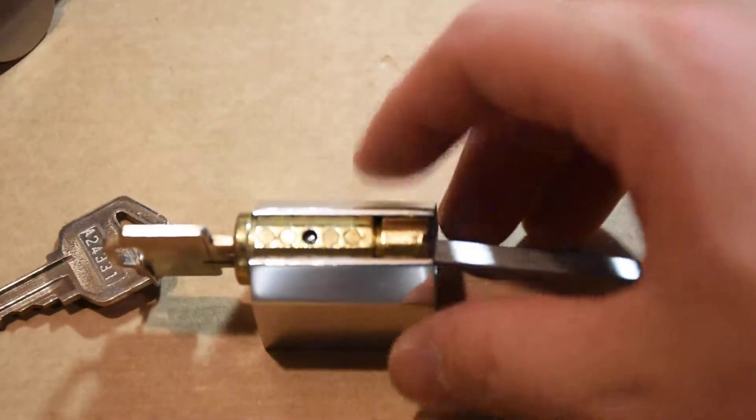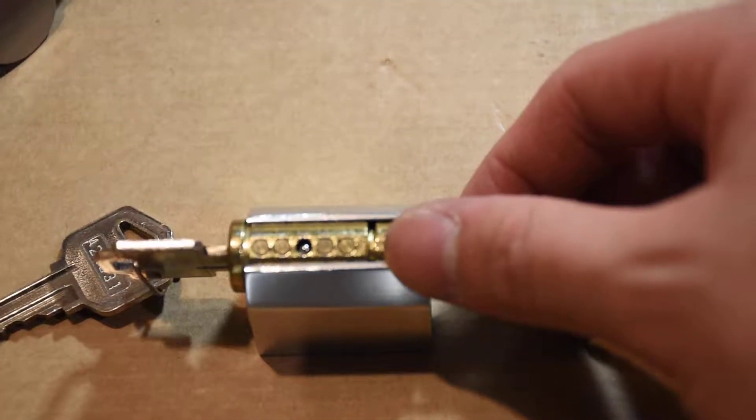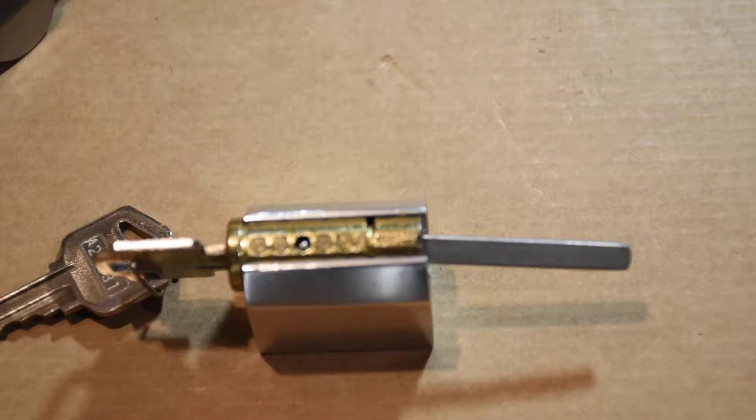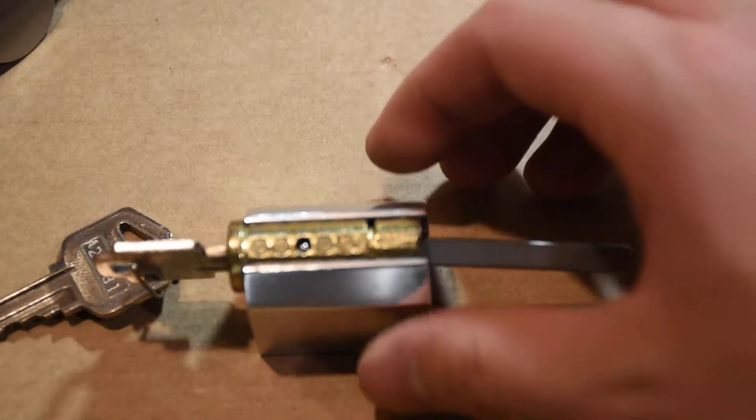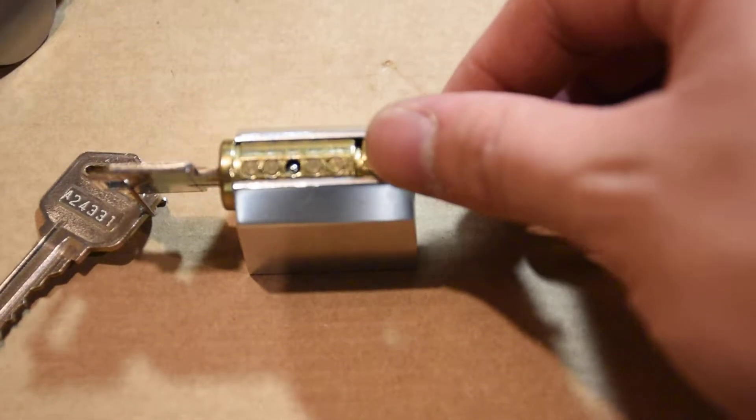Cool. As you can tell, we have a nice little ball bearing there. This ball bearing is going to allow this position to align with the shear line, and the lock will turn.